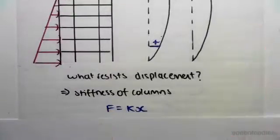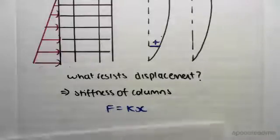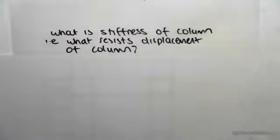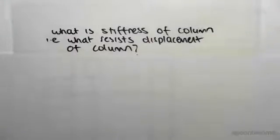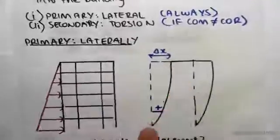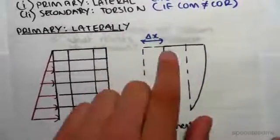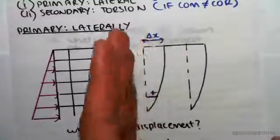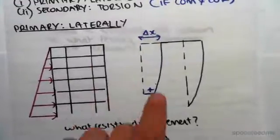Now the next question we need to ask is what is the stiffness of the column? In other words, what resists displacement of the column or deformation of the column? We've said that the resistance of the overall structure is these vertical members, the columns, which makes sense. But what is the stiffness of these columns actually dependent on?